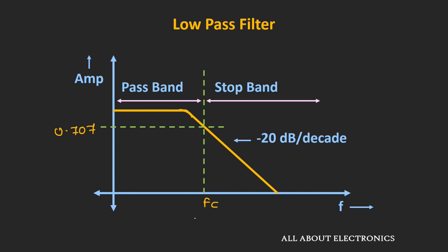The frequency at which the output is 0.707 times the input is known as the cutoff frequency or the -3 dB frequency. At this frequency, the output will be 1 over root 2 times the maximum output value. After this cutoff frequency, the output reduces at a rate of -20 dB per decade — meaning if you increase the frequency by 10-fold, the output reduces by a factor of 10.